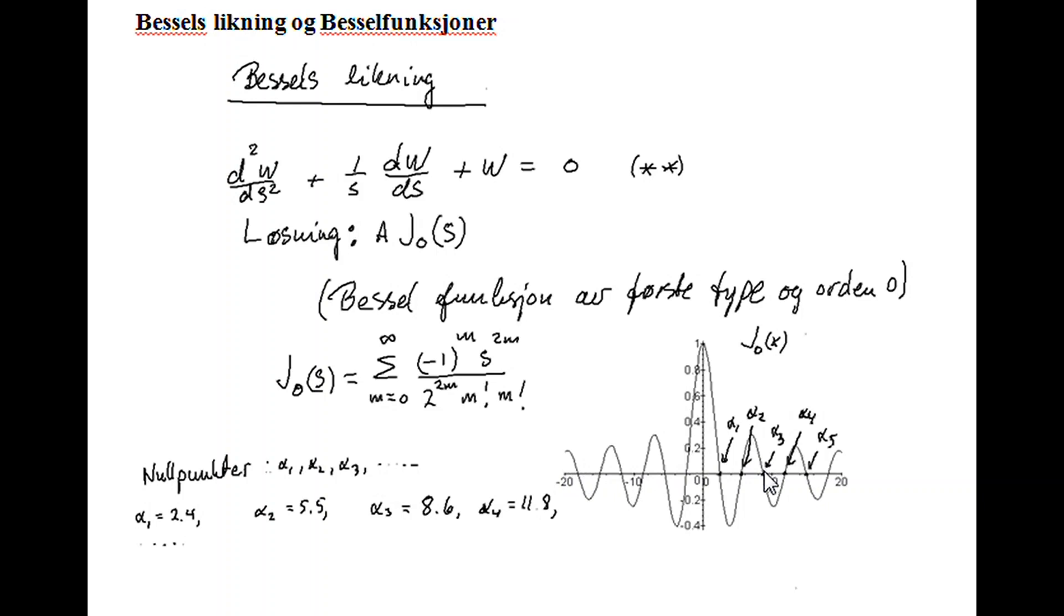And if you sketch it, it will look like this. So it's symmetric with respect to this y-axis, or more precisely the vertical axis. And we have some zeros, infinitely many zeros, in fact. We call them alpha-1, alpha-2, alpha-3, alpha-4, alpha-5, and so on.